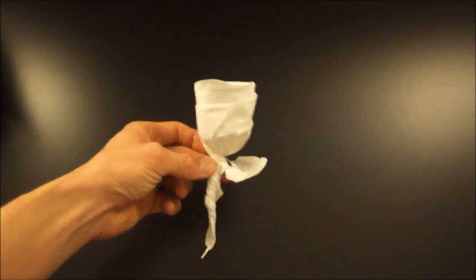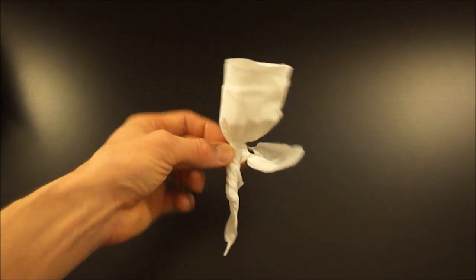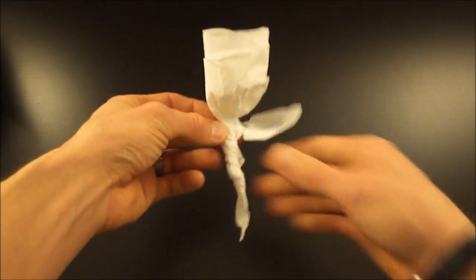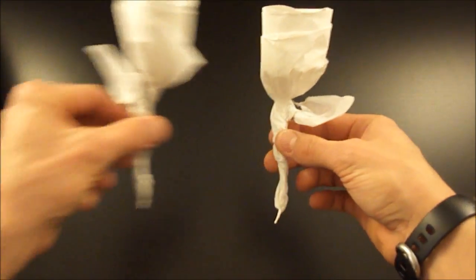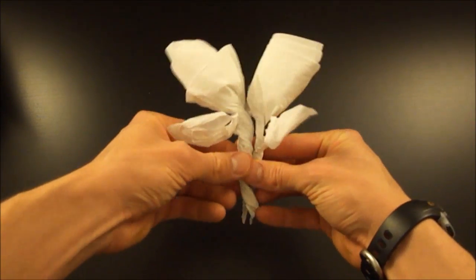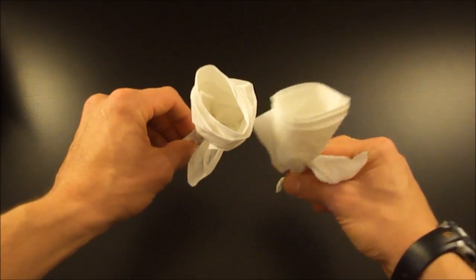And there you go. It's simple as that. That is your napkin flower, or you can call it a napkin rose. There's one I made from before. I think that turned out really well. They actually complement each other really nicely. I think it's a nice gift you could give somebody while you're out someday.